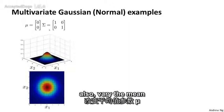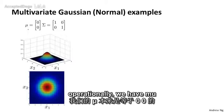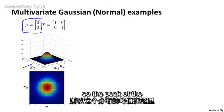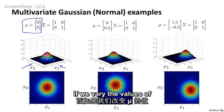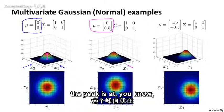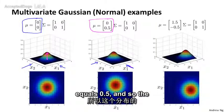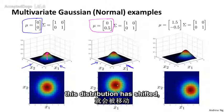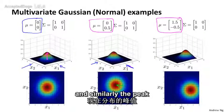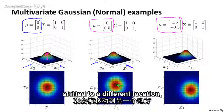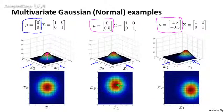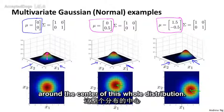The other thing you can do is also vary the mean parameter mu. And so originally we had mu equals 0, 0. And so the distribution was centered around x1 equals 0, x2 equals 0. So the peak of the distribution is here. Whereas if we vary the values of mu, then that varies the peak of the distribution. So mu equals 0, 0.5, the peak is at x1 equals 0 and x2 equals 0.5. And so the peak or the center of this distribution has shifted. And so if mu equals 1.5 minus 0.5 then again similarly the peak of the distribution has now shifted to a different location corresponding to where x1 is 1.5 and x2 is minus 0.5. And so varying the mu parameter just shifts around the center of this whole distribution.